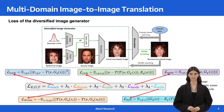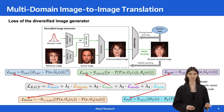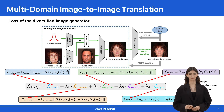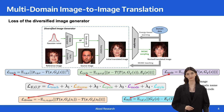We then present the loss of the diversified image generator, which includes the style encoder, style generator, and the translator. The loss includes an MCMC teaching loss, which is required for the cooperative learning, a diversity loss, a cycle consistency loss, a style code reconstruction loss, and an energy-based regularization on the translator, which aims at shifting the translator mapping toward the low-energy modes of the energy function.